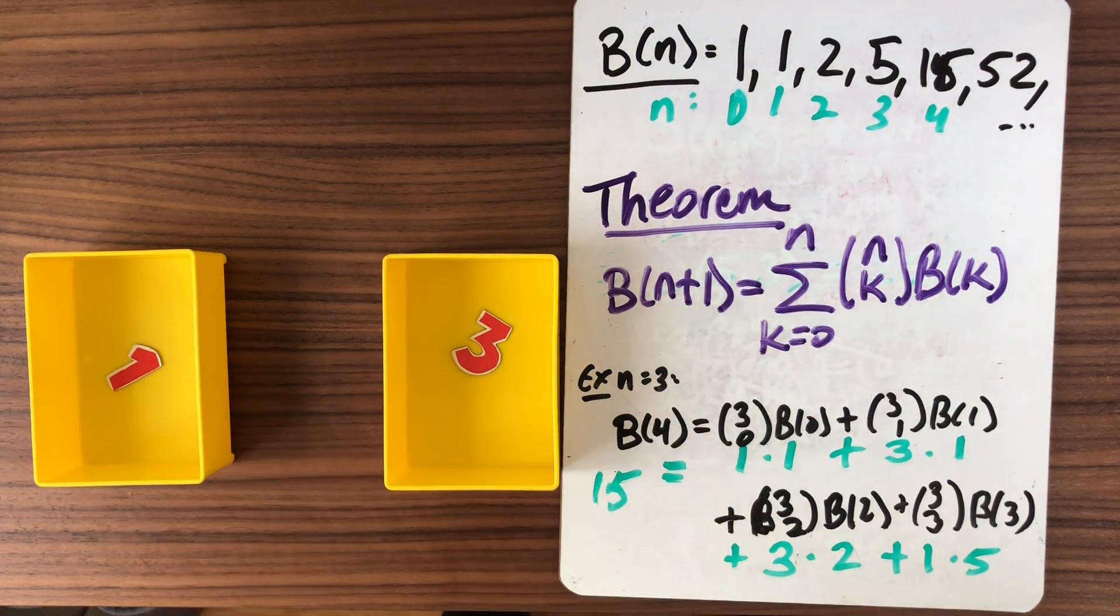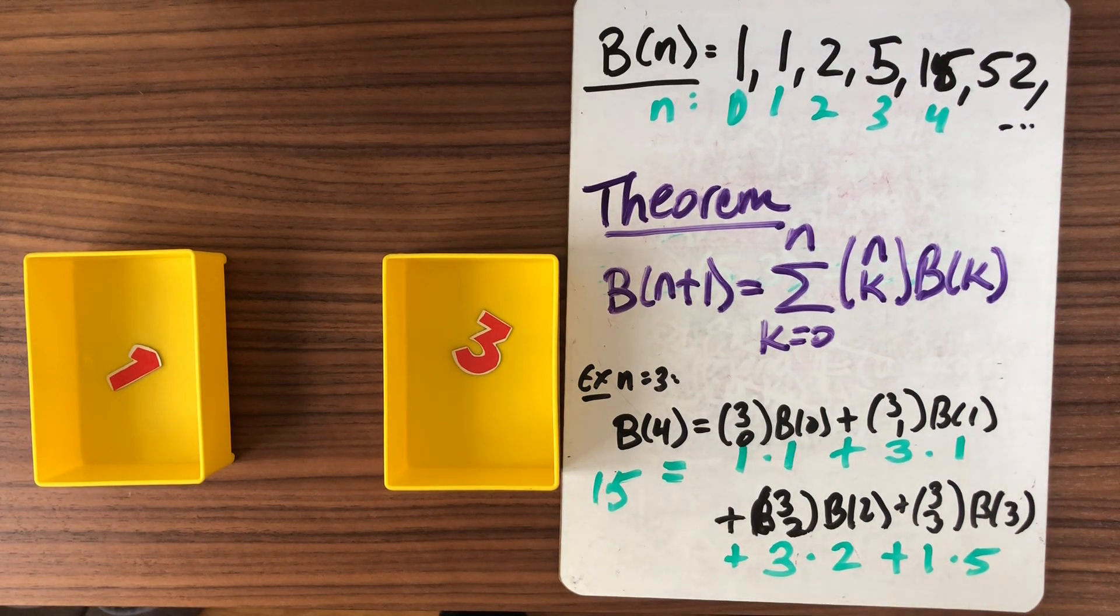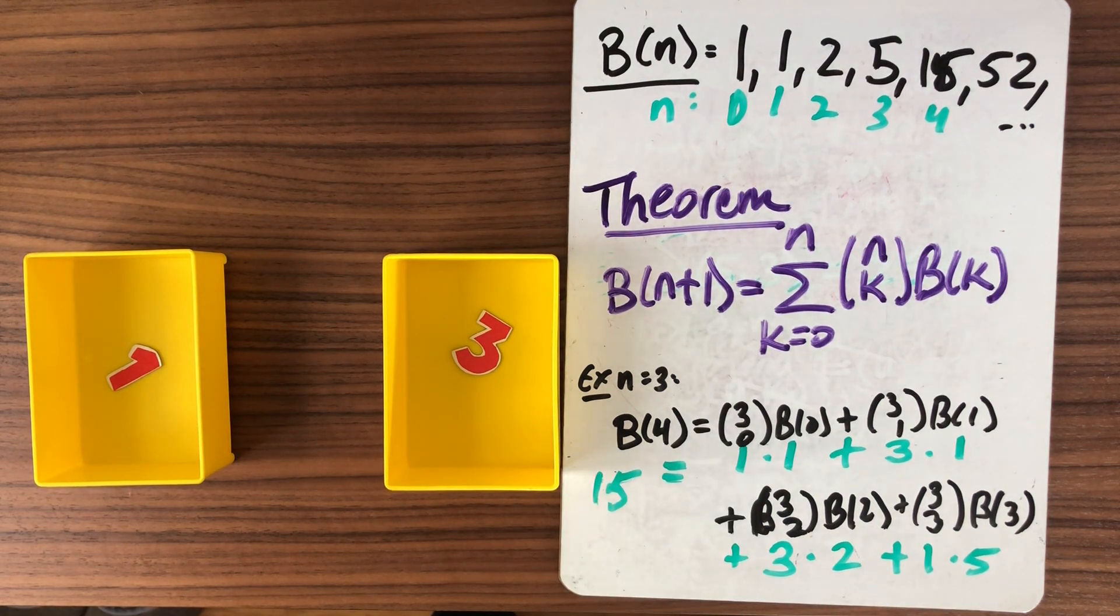If you play around with this and come up with a combinatorial proof, it'll give you some intuition on how these Bell numbers behave. And in the next video, we'll see how we can use generating functions and this recurrence relationship to derive a formula.